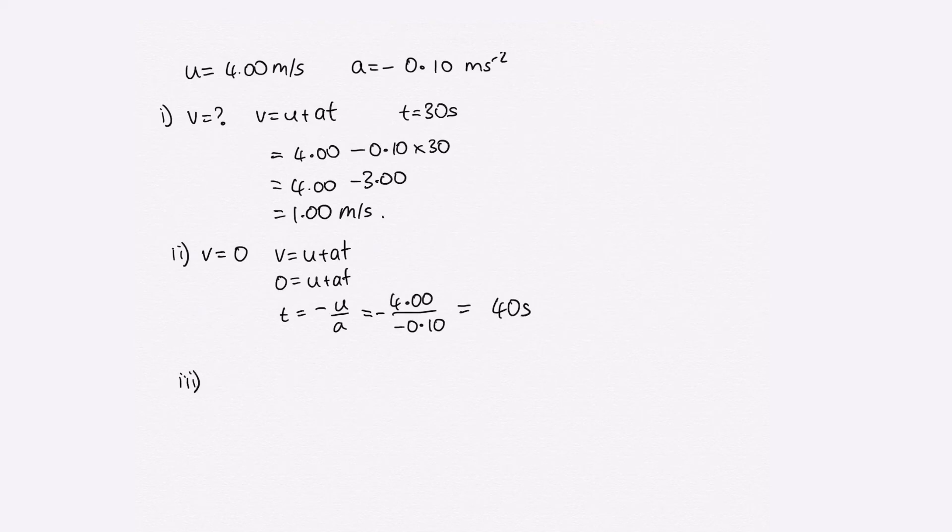In part three, we're asked what distance has Anna traveled when she comes to rest. In this case, we want to use s is equal to ut plus half at squared, and the time in this case is the 40 seconds that we calculated in part two.